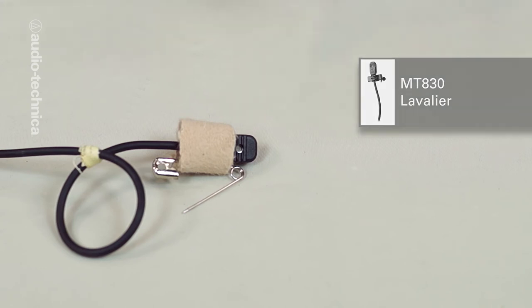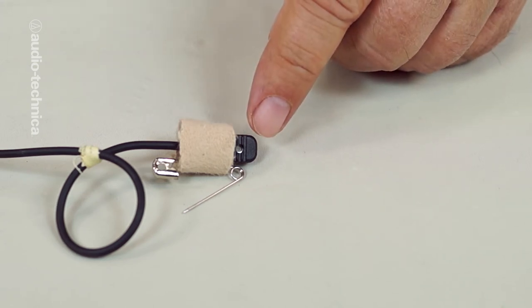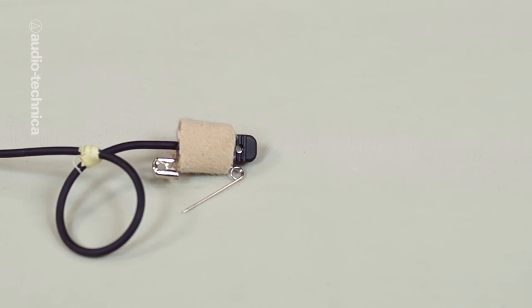If your lavalier is a side address or side facing configuration, be very careful not to block the opening. If possible, just wrap the moleskin lower, leaving the upper portion of the mic exposed, and make sure that the safety pin will not contact the mic.